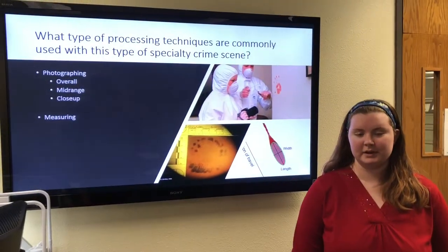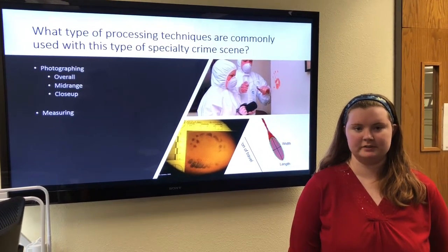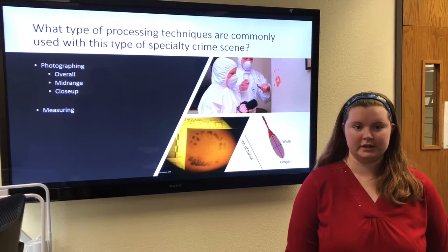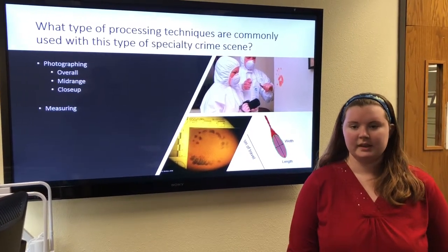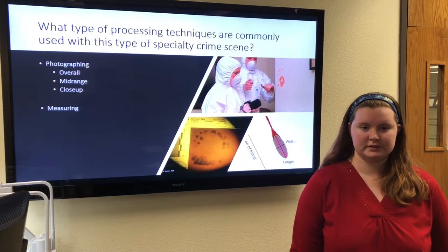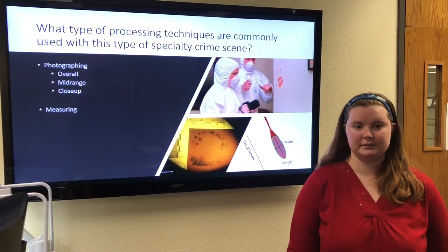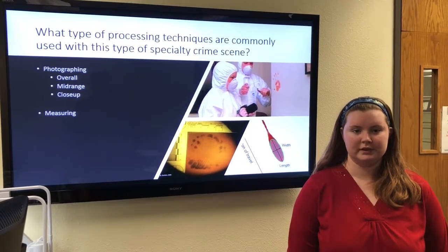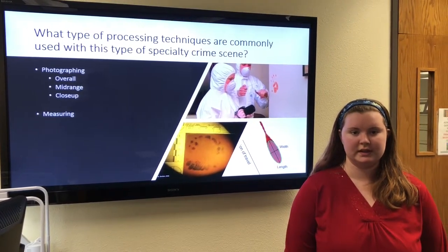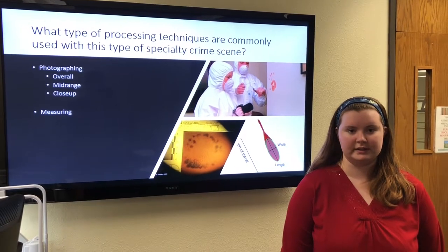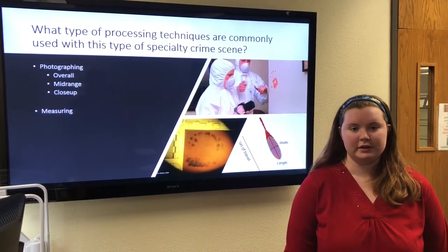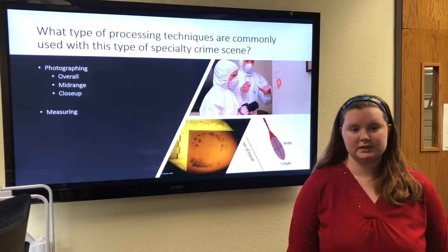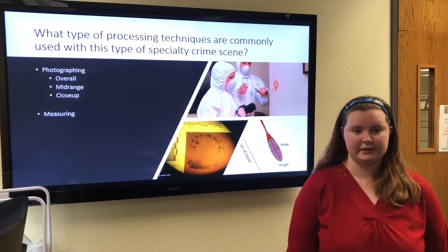What type of processing techniques are used with the blood stain crime scene? Photography is probably the most important element for documentation. You need overall photos, mid-range photos, and close-up photos of all the blood stains. Overall photos give the viewer reference to where the blood stains are in the scene, mid-range photos give an overview of the stains themselves, and close-up photos give detail of each individual stain.